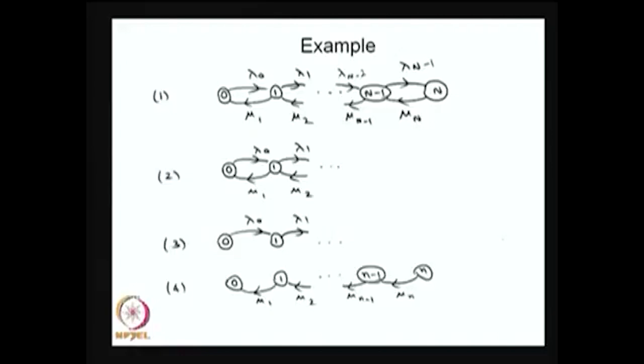One can also discuss state classification. The first example is a finite state model where all states communicate with all other states; therefore it is an irreducible, positive recurrent birth-death process. The second example is infinite state and irreducible since all states communicate. However, one cannot conclude whether it is positive recurrent or null recurrent without knowing the values of λᵢ's and μᵢ's. If the mean recurrence time is finite, it is positive recurrent; otherwise null recurrent. But one can conclude it is recurrent.